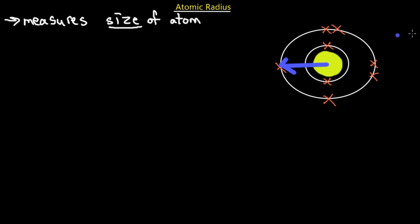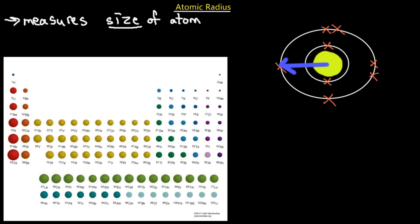This diagram puts the atomic radius into perspective. Non-metals have a tiny atomic radius whereas metals have a large atomic radius. The general periodic trend of atomic radius is that it increases going towards the left and it increases going downwards.